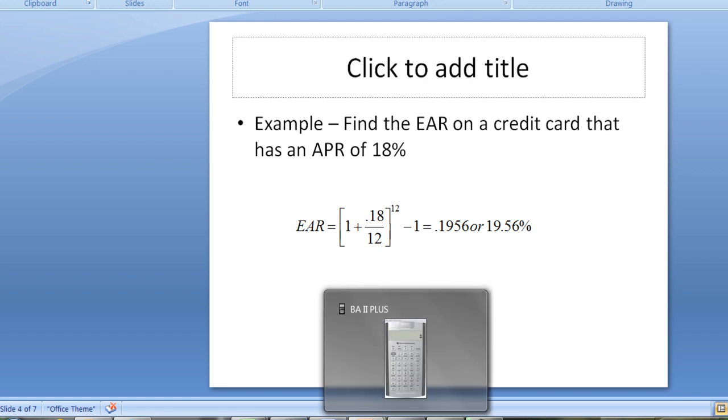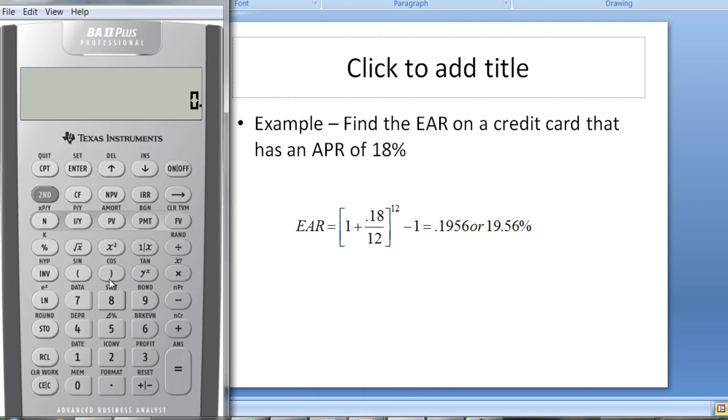And we can check that on the financial calculator if we'd like. I'm not going to use the financial calculator function, I'm just going to do the calculation. So this is going to be 1.015 raised to the 12th power, and then if we subtract 1 from it, we get 0.1956, which is what I have here, or 19.56%.